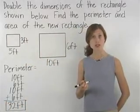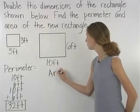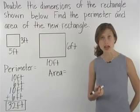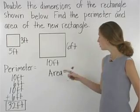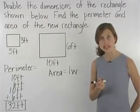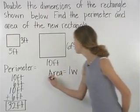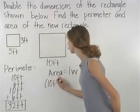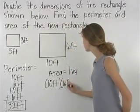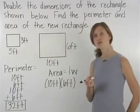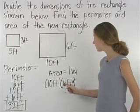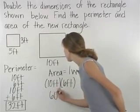Now, to find the area of our new rectangle, remember the formula for the area of a rectangle, which is area equals length times width. Here, our rectangle has a length of 10 feet and a width of 6 feet. So our new rectangle has an area of 10 feet times 6 feet, or 60 feet squared.